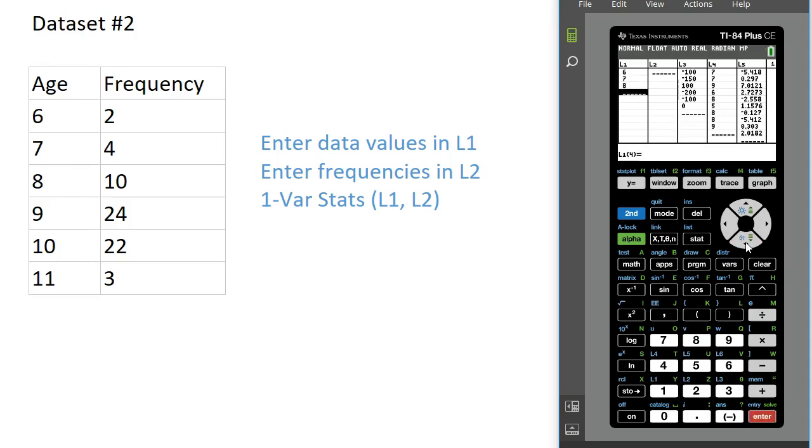I am going to enter all of the age values in the first list: 6, 7, 8, 9, 10, 11. Then I'm going to use the second list and put in the frequencies: 2, 4, 10, 24, 22, and 3.